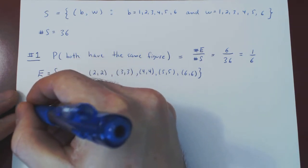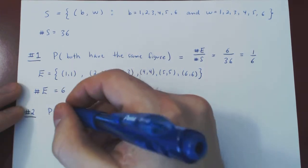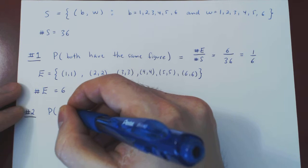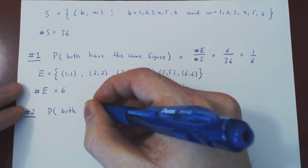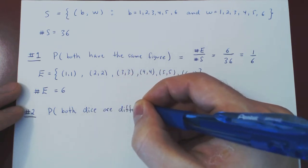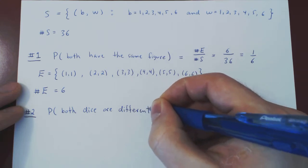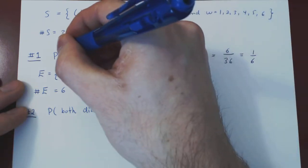Number two. What if I ask now the probability that the dice have a different figure from one another? So I'll just say both dies are different. Now here there's two ways of doing this. There's the long way and there's the short way.